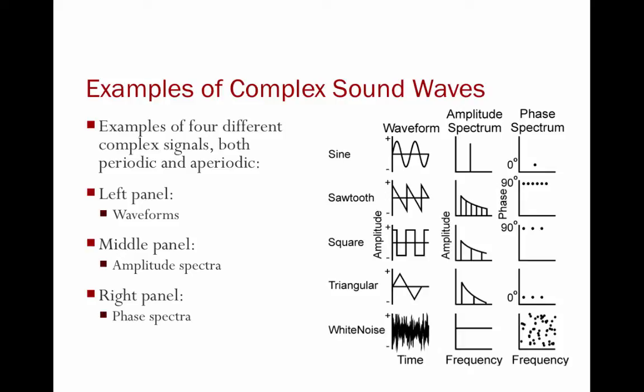Looking at the phase spectrum, you can see all of the sine waves that compose this complex wave have the same starting phase. In this example, the starting phase is 90 degrees. So we have 1, 2, 3, 4, 5, 6 waves starting at 90 degrees.